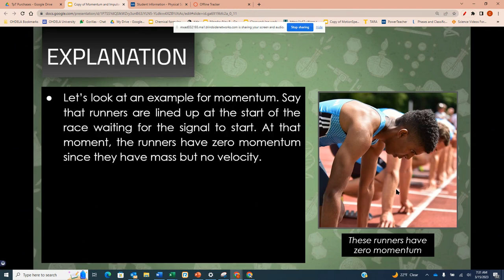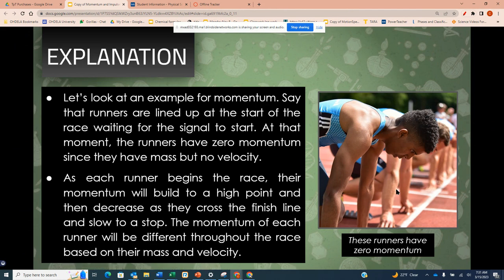Let's look at an example of momentum. Say that runners are lined up at the start of the race waiting for a signal to start. At the moment, the runners have zero momentum since they have mass but no velocity. As each runner begins the race, their momentum will build to a high point and then decrease as they cross the finish line and slow to a stop. The momentum of each runner will be different throughout the race based on their mass and velocity.